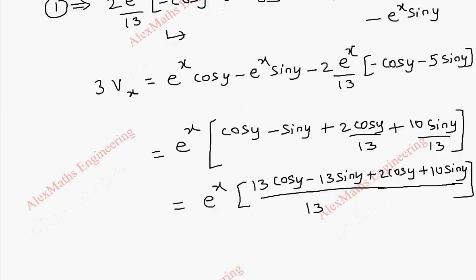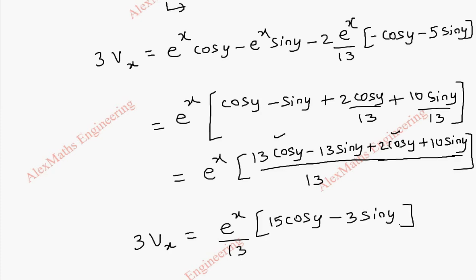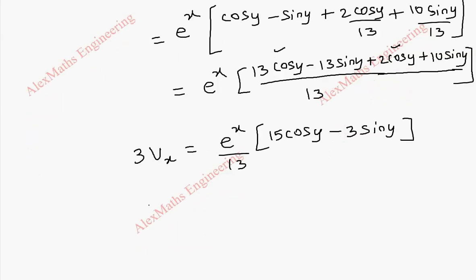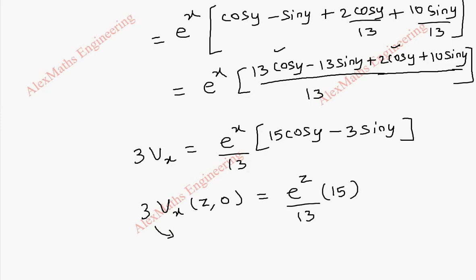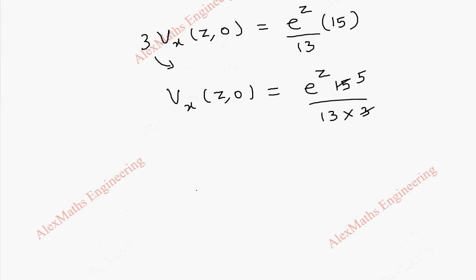So 3vx equal to e power x over 13. Adding cos terms we get 15 cos y, and adding sin terms we get minus 3 sin y. From this, finding vx of z comma 0 — when y is 0, cos 0 is 1 so we are left with 15, and sin 0 is 0 — this becomes e power z over 13 into 15, and dividing by 3 gives vx of z comma 0 equal to 5e power z over 13.